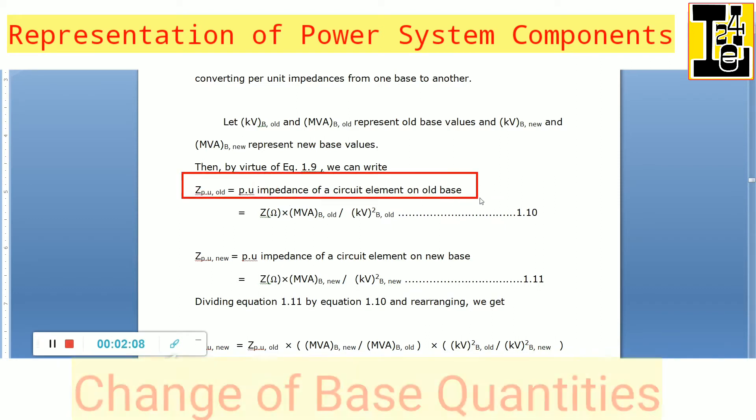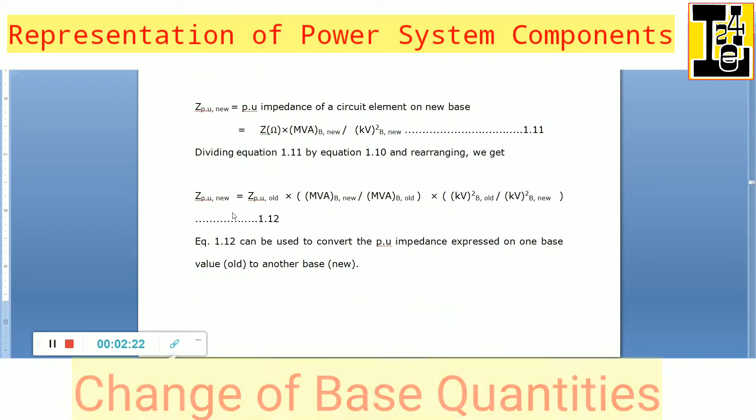Can be expressed as Z per unit new is equals to Z ohm into MVA base new divided by KV base new square.